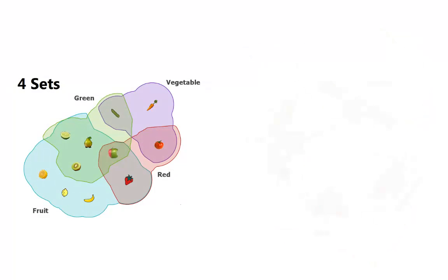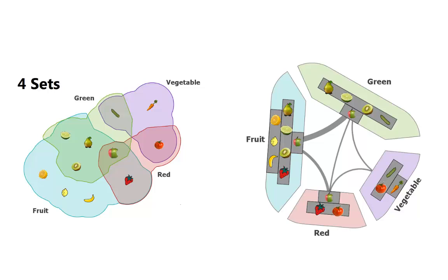Radial sets is a new visualization technique for overlapping sets. It avoids the topological constraints by using separate visual items for the sets and for the overlaps.